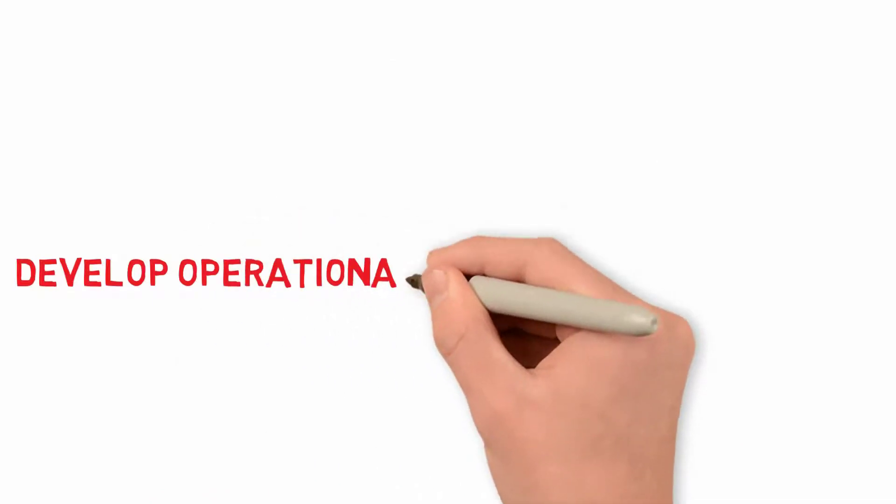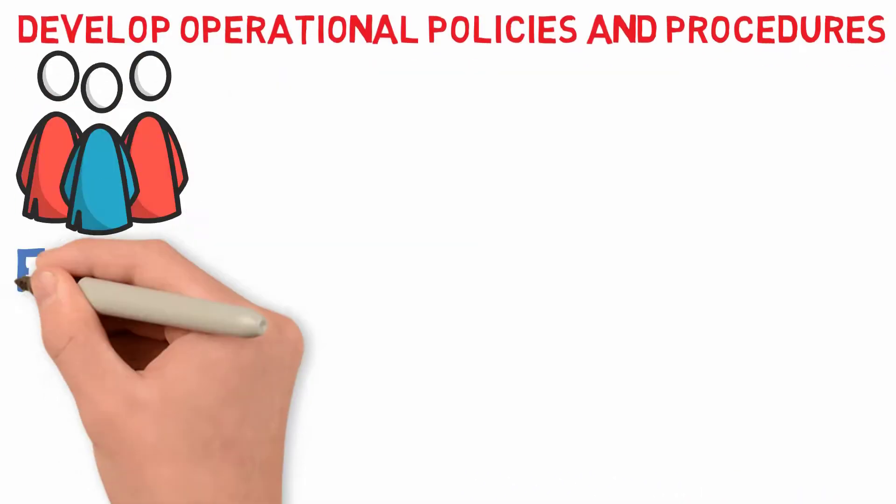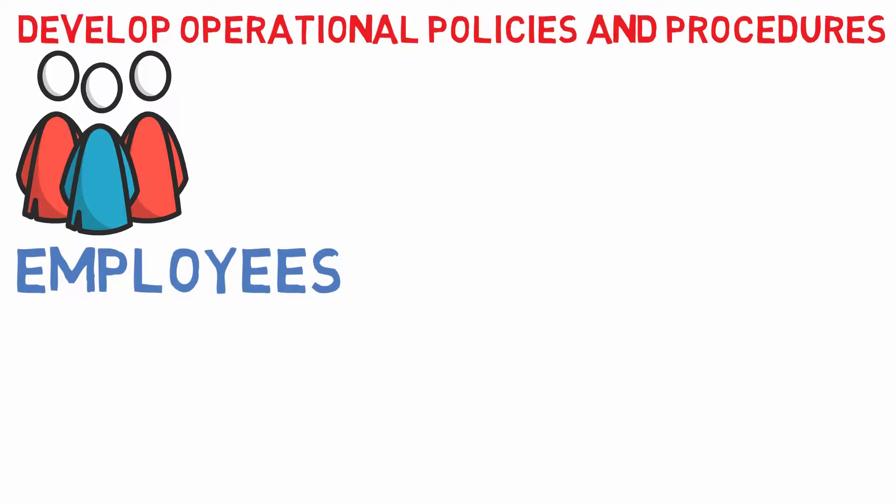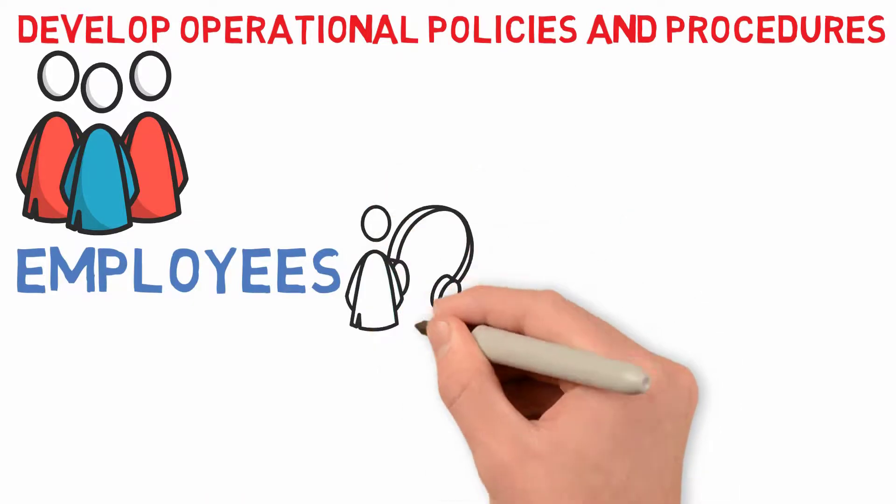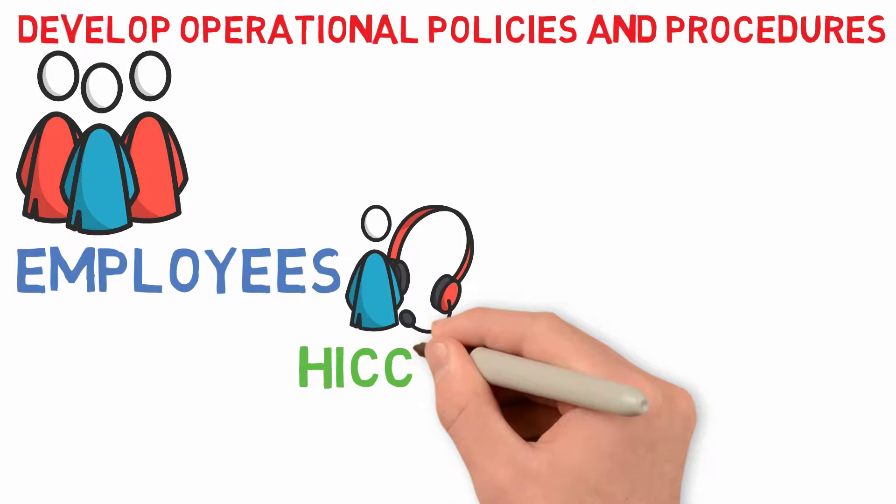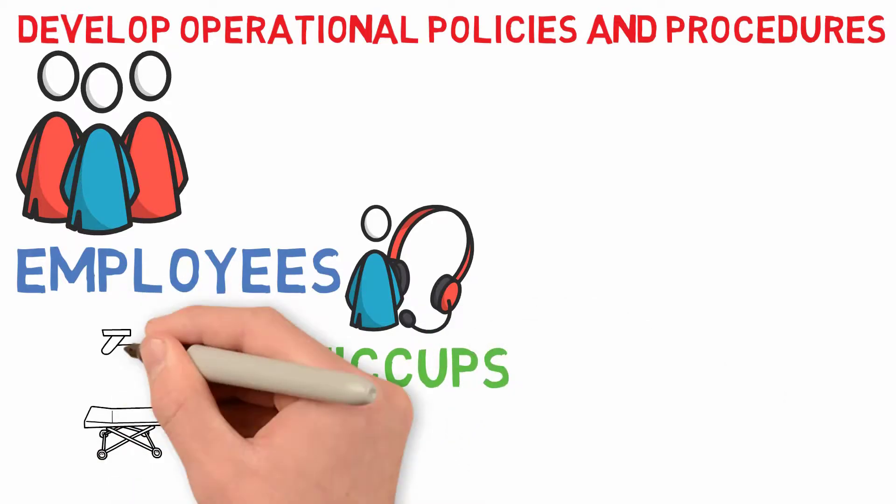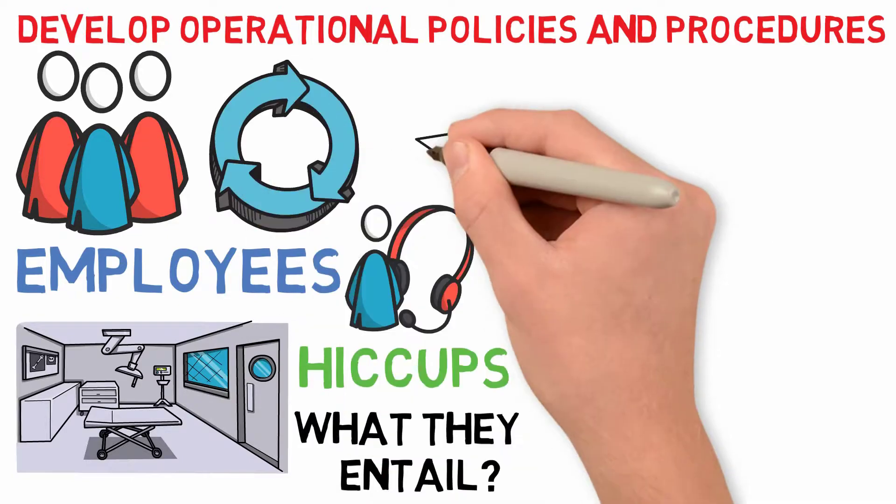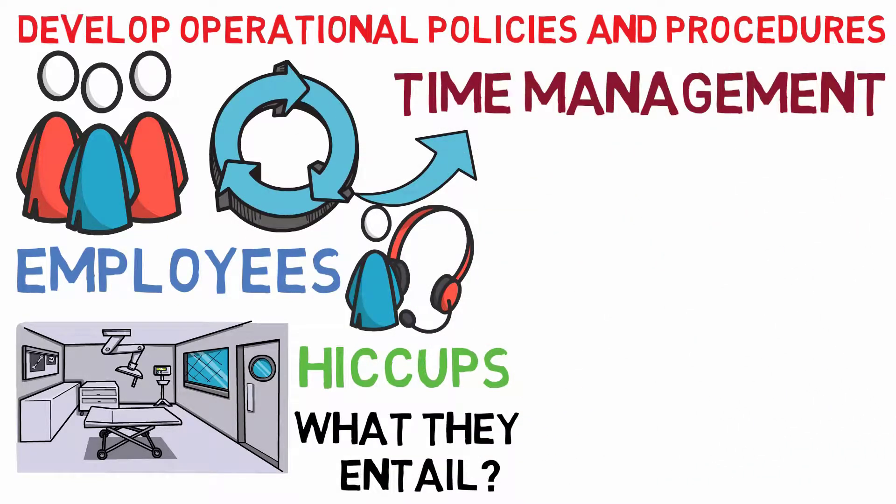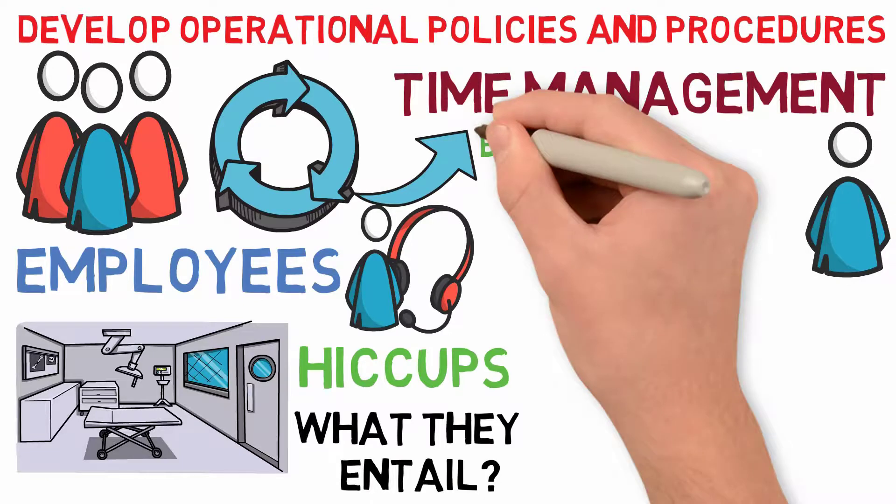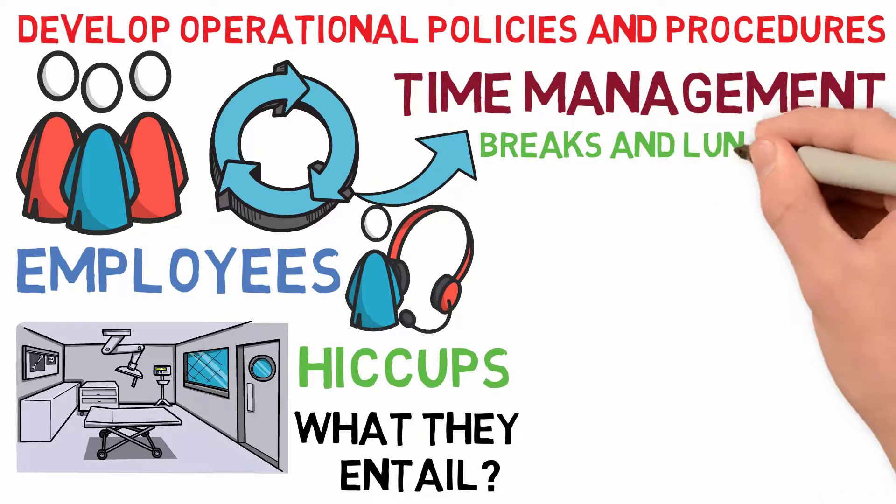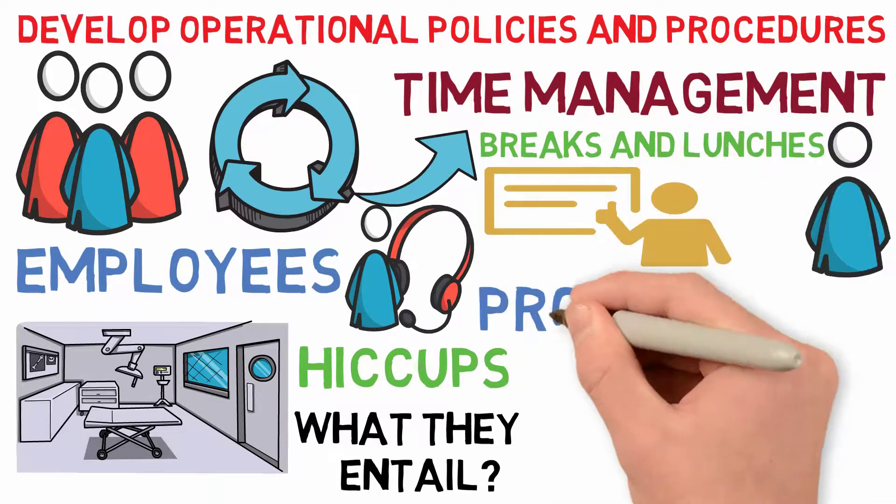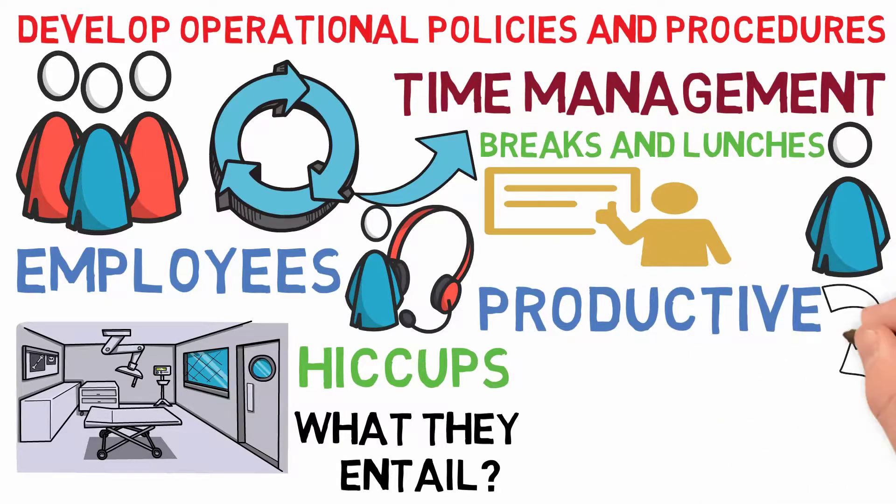Develop operational policies and procedures. This will ensure all employees are operating under the same guidelines, so there is consistency across departments and everything runs smoothly without any hiccups. Operational policies and procedures should be clearly stated, so there is no confusion as to what they entail. For example, if you have processes that need to do with time management, then it will be best for employees to know the company's official schedule for breaks and lunches. This will ensure all your employees stay productive throughout their workday.